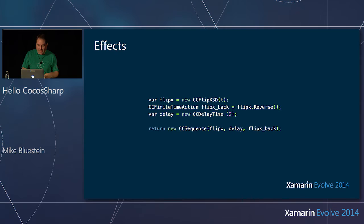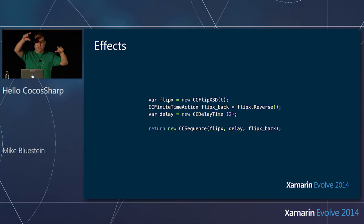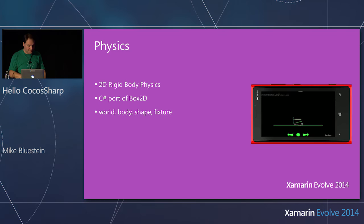Here's an example of the code for a flip effect — you've seen this where you flip from the front of a view to the back like flipping a card. I have a CC Finite Time Action with CC Flip X3D — underneath there's a matrix transformation that does the flip. I put it in a CC Sequence because it's just another action. Remember CC Sequence is where you do one action after another, so effects participate in actions in a first-class manner.